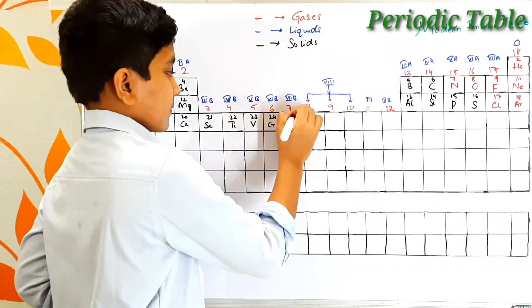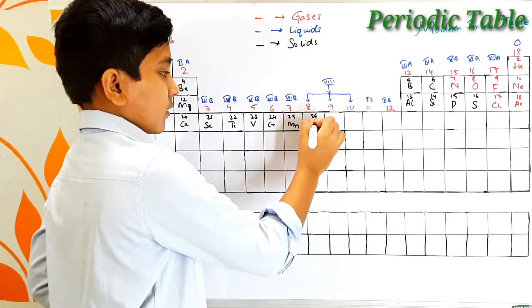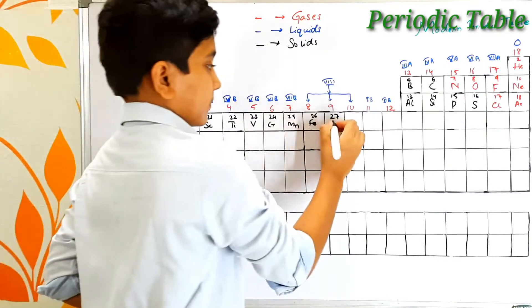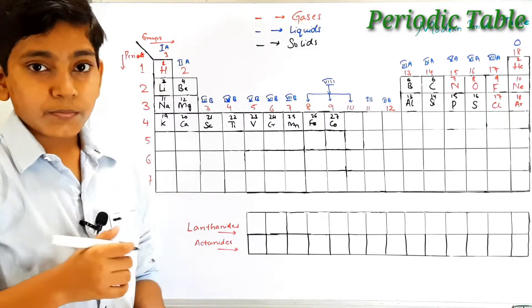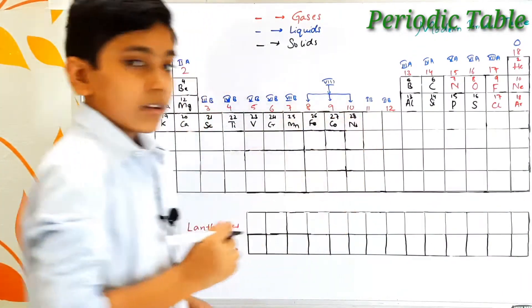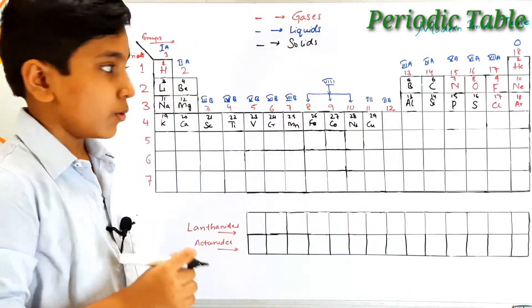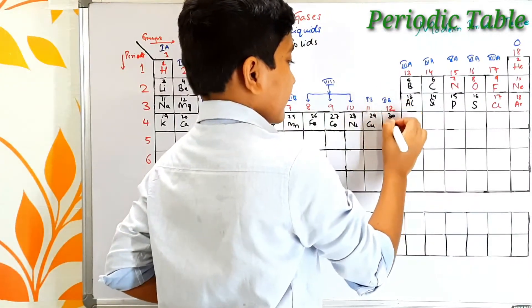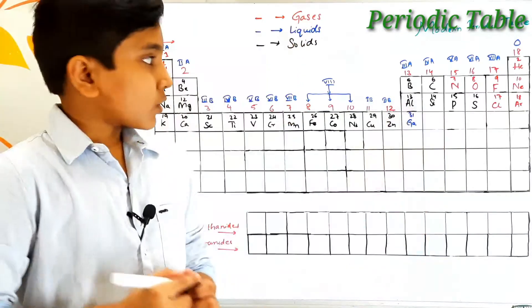Atomic number 25 is manganese, atomic number 26 is iron — iron's symbol is Fe. After iron, atomic number 27 is cobalt — its symbol is Co. Atomic number 28 is nickel — its symbol is Ni. Atomic number 29 is copper — its symbol is Cu, which comes from the Latin name cuprum. Atomic number 30 is zinc — its symbol is Zn.